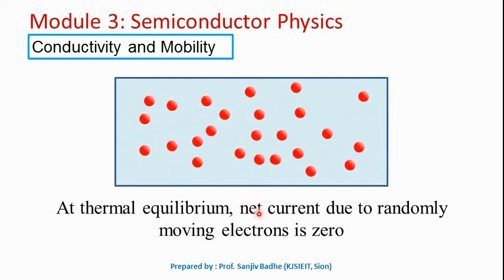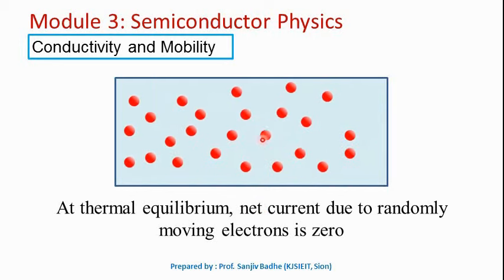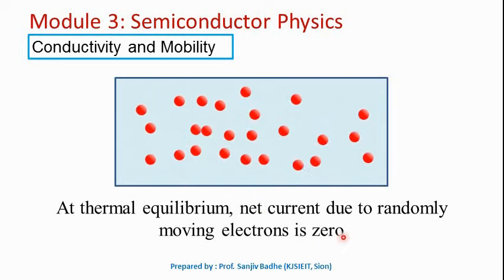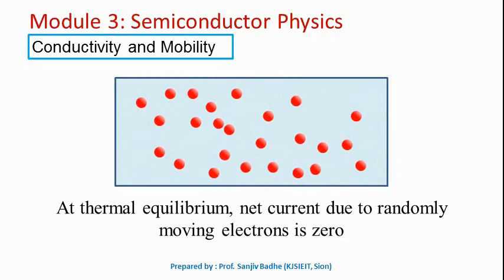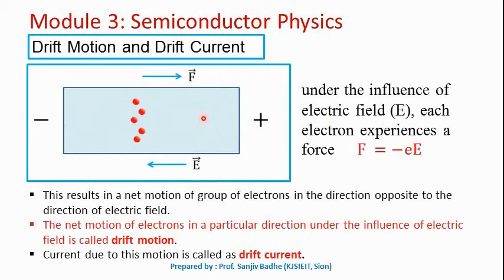At thermal equilibrium, the net current due to these randomly moving charge carriers — randomly moving electrons — will be zero. Now when we apply an electric field across this conductor, under the influence of the electric field, each of these electrons will experience a force F in the direction opposite to the direction of the electric field.